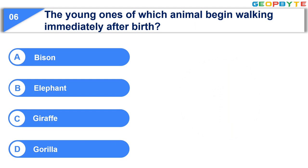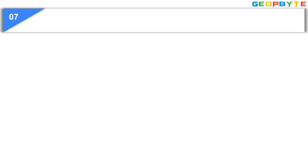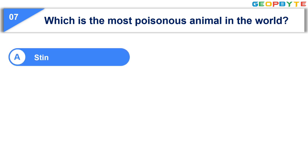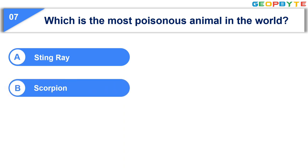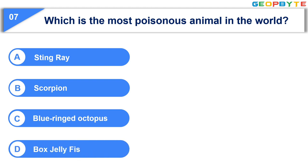Your time is up and the correct answer is Option B: Elephant. Moving to the next question: Which is the most poisonous animal in the world? Option A: Stingray. Option B: Scorpion. Option C: Blue-Ringed Octopus. Option D: Box Jellyfish. Your time starts now!